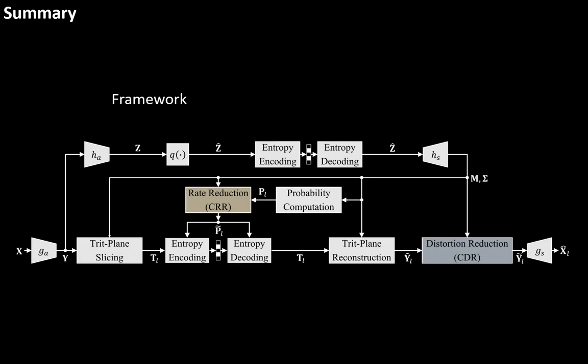CTC is based on the triplet coding, which compresses the triplanes sliced from the latents Y. We exploit the context in two ways, for rate reduction and for distortion reduction. Such reductions are carried by the context modules named CRR and CDR respectively.